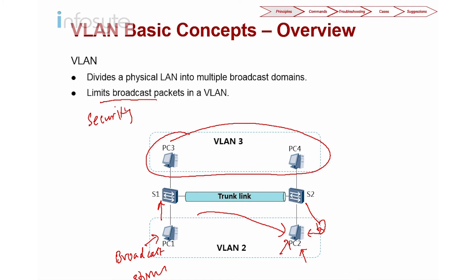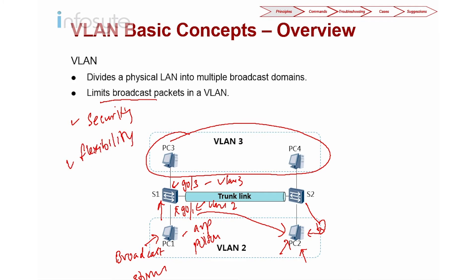The reason security is increased is that if someone performs ARP poisoning, they can only attack hosts within the same VLAN. By using VLAN, security is increased. VLAN is also configurable — you can specify which port belongs to which VLAN, giving you flexibility. Basically, VLAN allows you to have security and flexibility, create multiple broadcast domains, and limit broadcast packets within a VLAN.